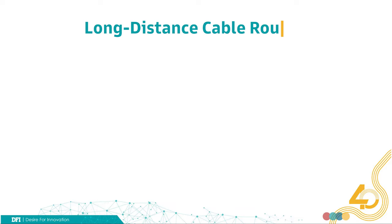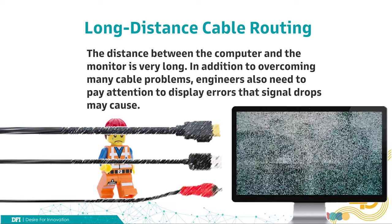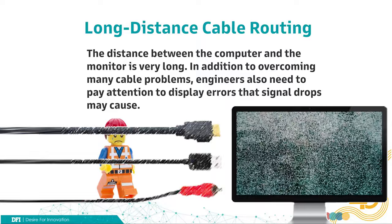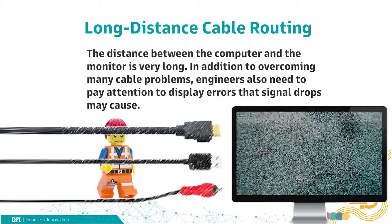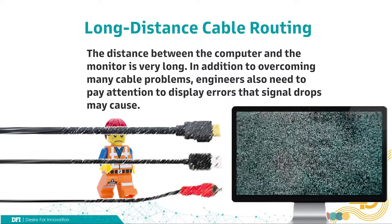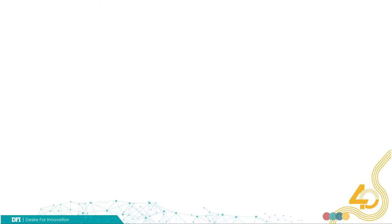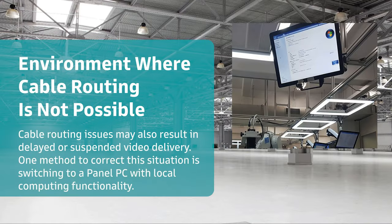Sometimes the distance between the computer and the monitor is very long. In addition to overcoming many cable problems, engineers also need to pay attention to display errors that signal drops may cause. Cable routing issues may also result in delayed or suspended video delivery.